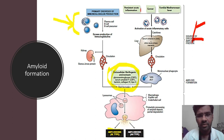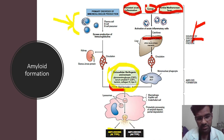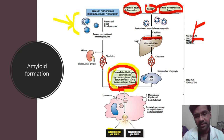For AA type of amyloid, causes include persistent acute inflammation, malignancy, or Mediterranean fever. The acute phase reactant SAA is produced by the liver, enters circulation, and when in excess, gets deposited into the tissues. When there is a fibrillogenic environment, it converts into fibrils, macrophages try to engulf and digest it, but digestion doesn't fully occur, and it gets secreted back into the tissues as AA type of amyloid.